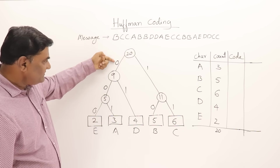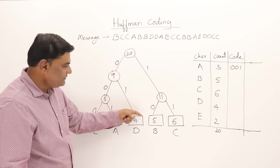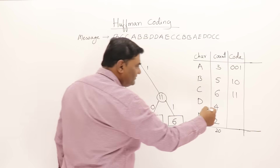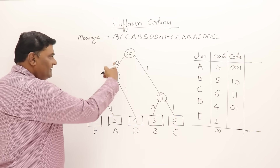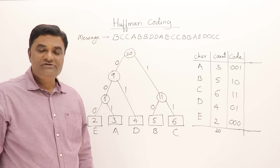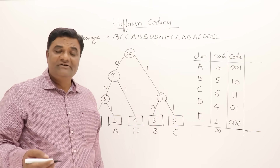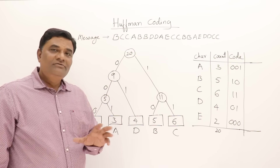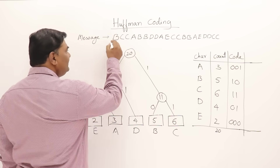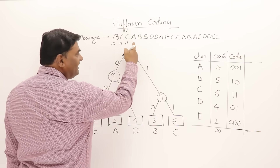Now the codes for each alphabet are found by following the path from the root. A is 001, B is 10, C is 11, D is 010, and E is 000. These are the new variable-size codes — some are three bits, one is two bits. Now I can use these codes for encoding the message: B is 10, C is 11, A is 001, and so on.